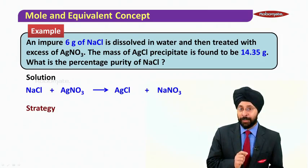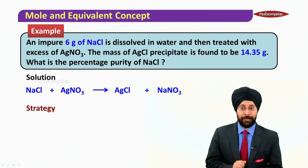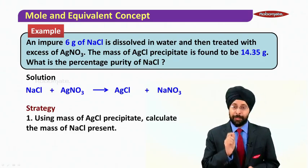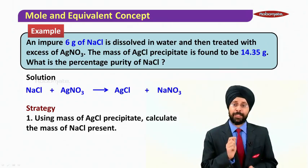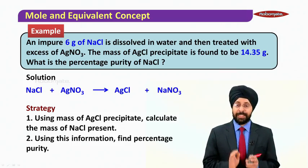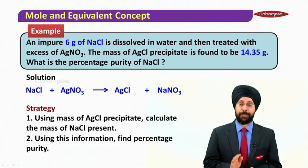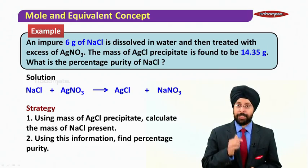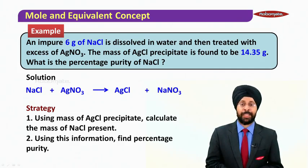Using the mass of AgCl precipitate, we will first calculate the mass of NaCl that is present. And then using this information, we find the percentage purity. Theoretically given is 6 grams, we can calculate.